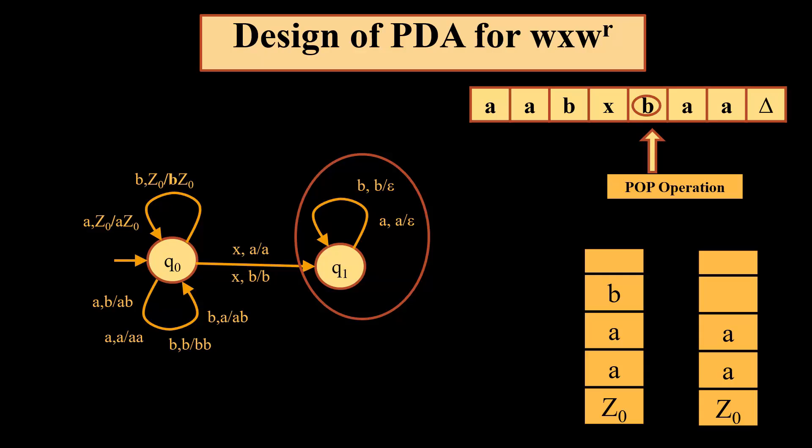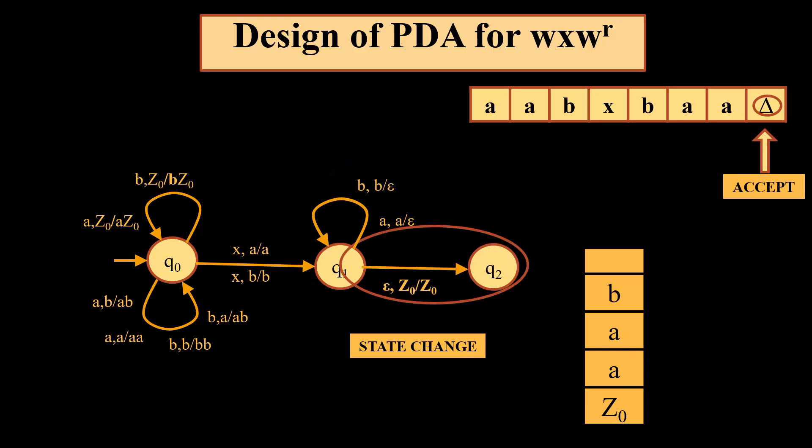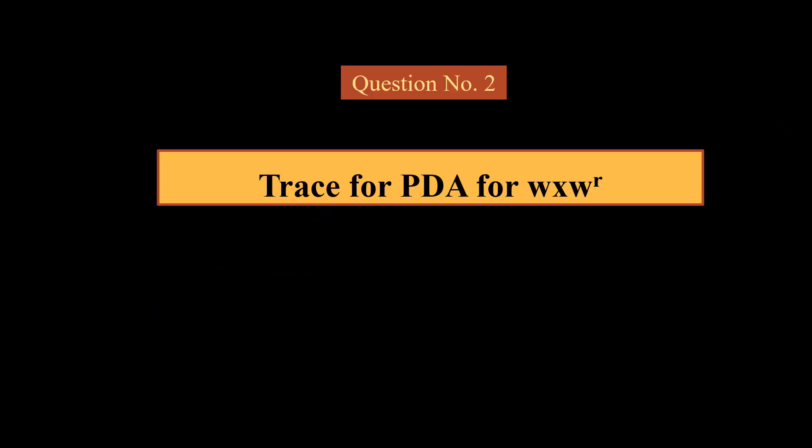After reading x, we move to the pop phase. If we read b, the element popped from the stack should also be b. If the element read on the tape is a, the element popped from the stack should also be a. So we have b slash epsilon and a slash epsilon, meaning we perform pop operations where corresponding to b, b should move out, and corresponding to a, a should move out from the stack. When the tape is empty, the stack should be empty and we move to the final state q2.